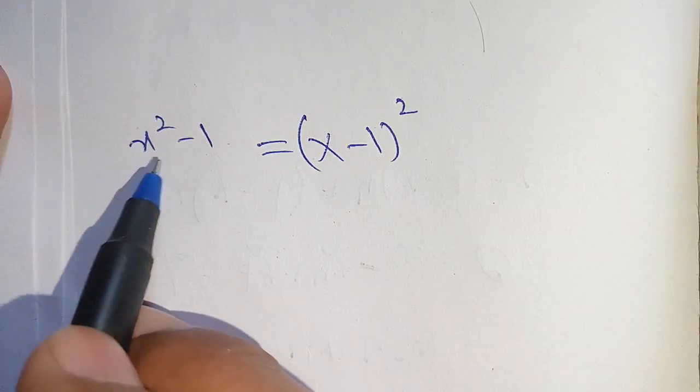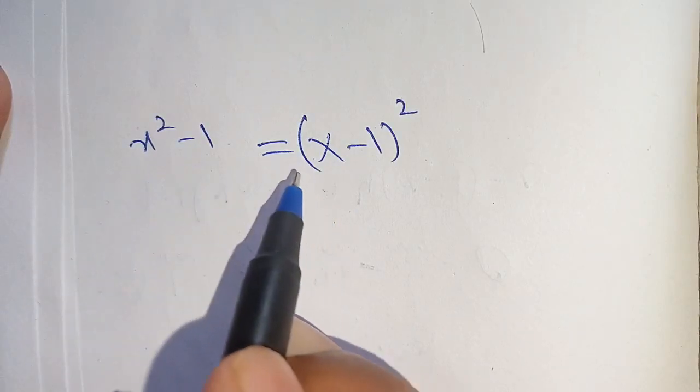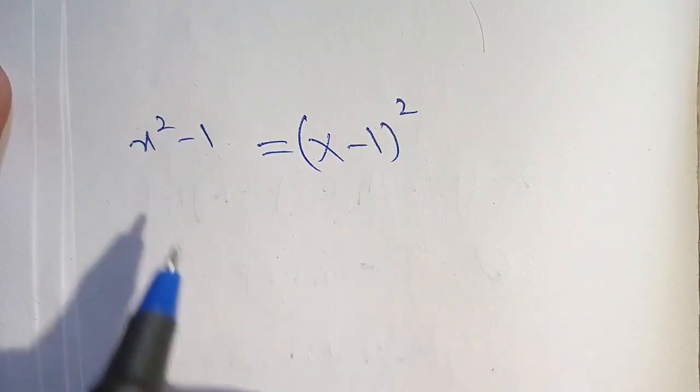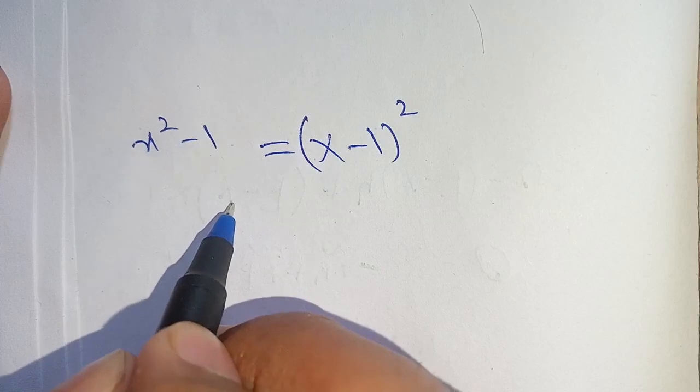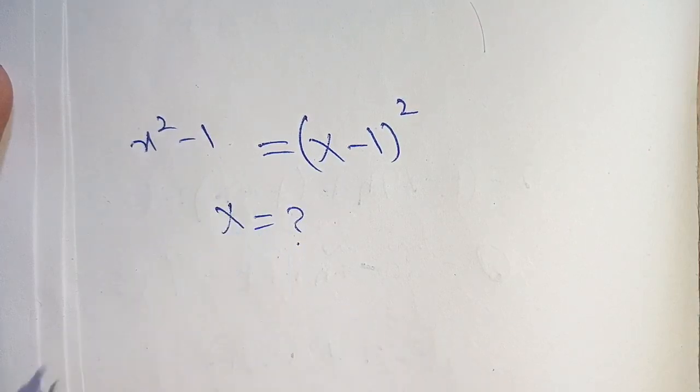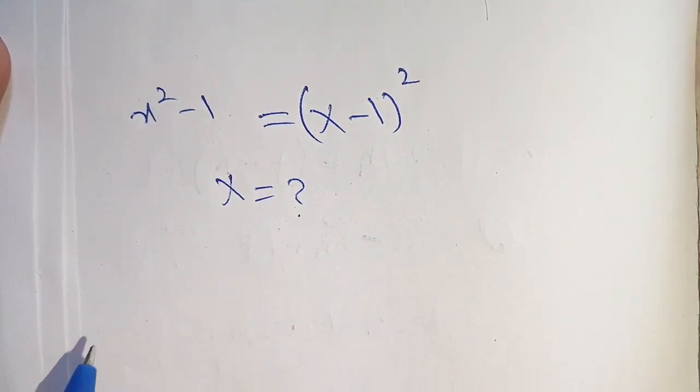Hello everyone. How to solve x squared minus 1 is equal to x minus 1 whole square, and we have to find the value of x which satisfies this equation. Let us solve this.